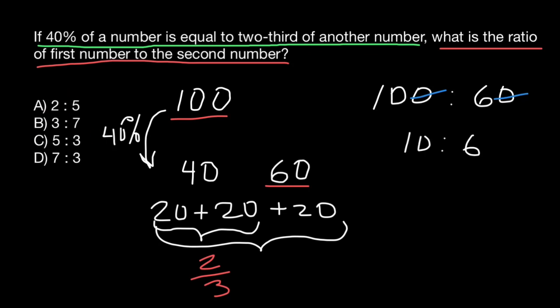We still don't have such an answer here. We can still reduce our numbers by 2. We can divide by 2 and our ratio is going to be 5 to 3. And this is answer C.